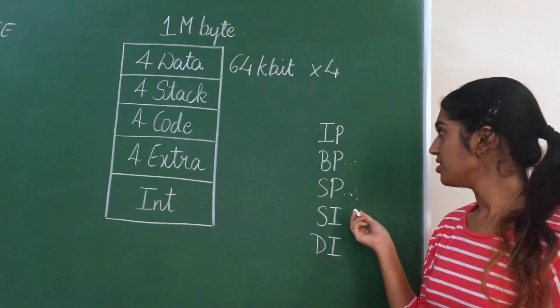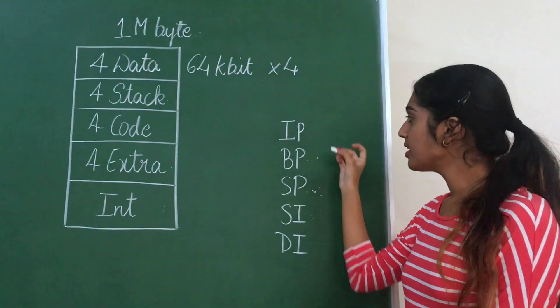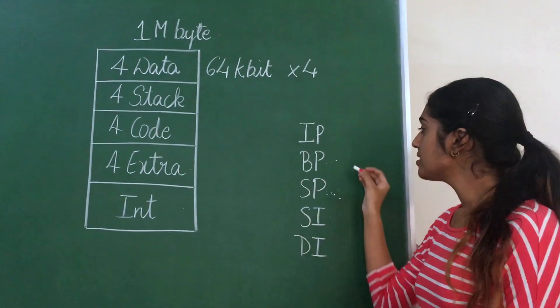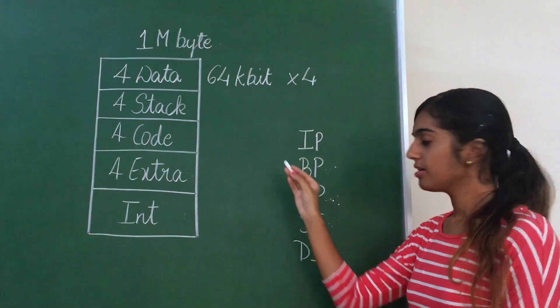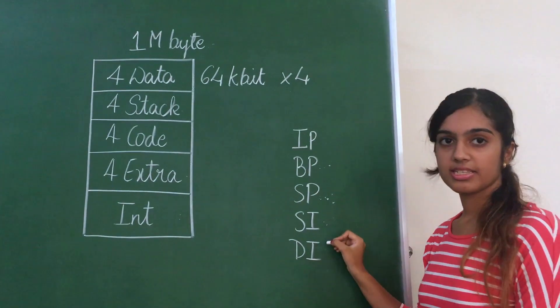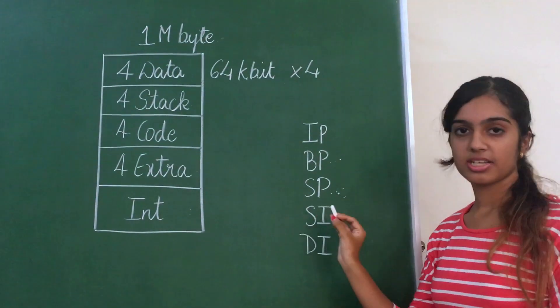Now to access this, we have pointer registers and index registers. The pointer registers are IP instruction pointer, which points to the next instruction in code segment. BP is base pointer, SP is stack pointer, which contains offset in stack segment. SI is source index and DI is destination index. SI is used to access data segment, DI is used to access extra segment.